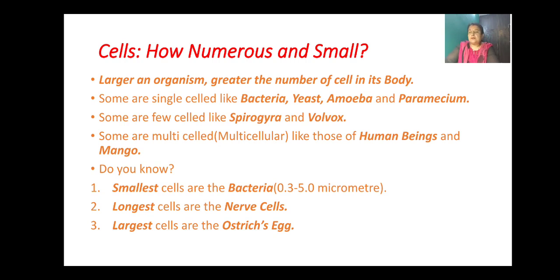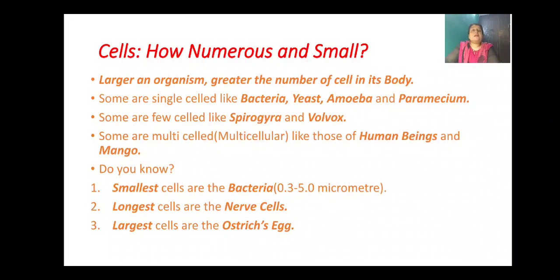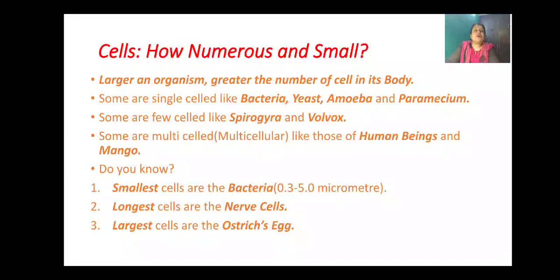Now we will know more about cells — how numerous and how small they are. The larger an organism, the greater the number of cells in its body. Some cells are single-celled, also known as unicellular, like bacteria, paramecium, yeast, and amoeba. Some are few-celled like spirogyra and volvox. Some are multi-celled, or multicellular, like human beings and plants. Some interesting facts: the smallest cells are bacterial cells, the longest cells are nerve cells, and the largest cells are ostrich eggs.